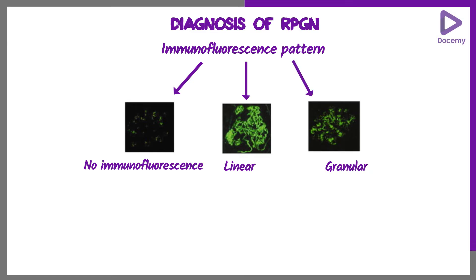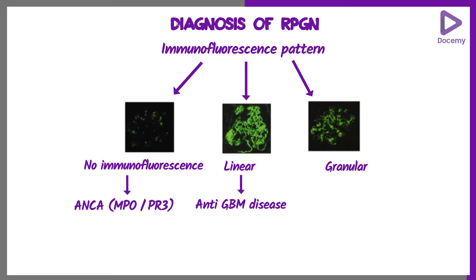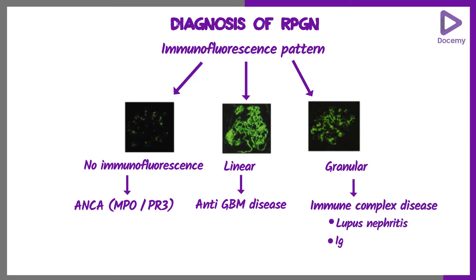If there is no immunofluorescence, test for ANCA — ANCA vasculitis, PR3 or MPO. If the pattern is linear, test for anti-GBM disease. If granular, look for immune complex diseases: lupus, IgA nephropathy, infection-related glomerulonephropathy, and similar conditions.